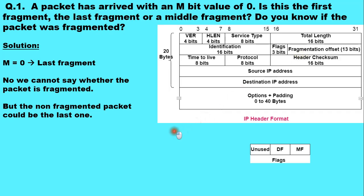Now here in this case, we are provided with the M bit value of 0. When M bit is 0, it means that the packet can be the last fragment, because M bit stands for the more fragment bit of the flags field.